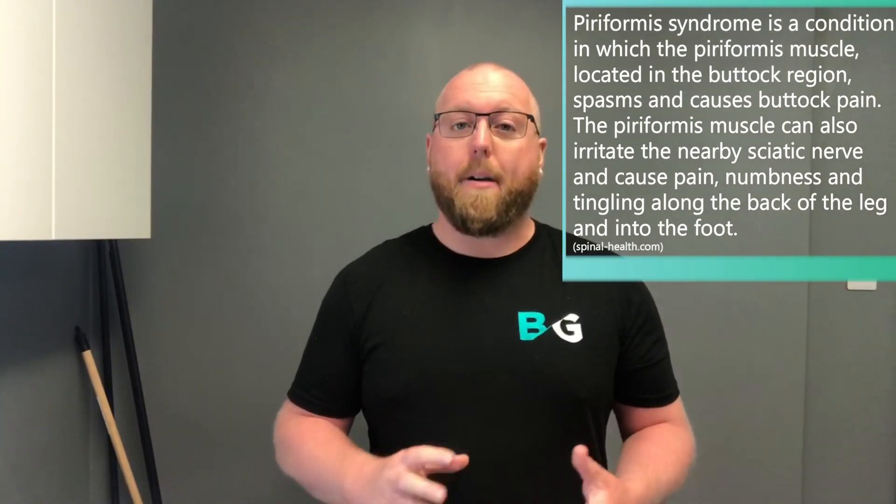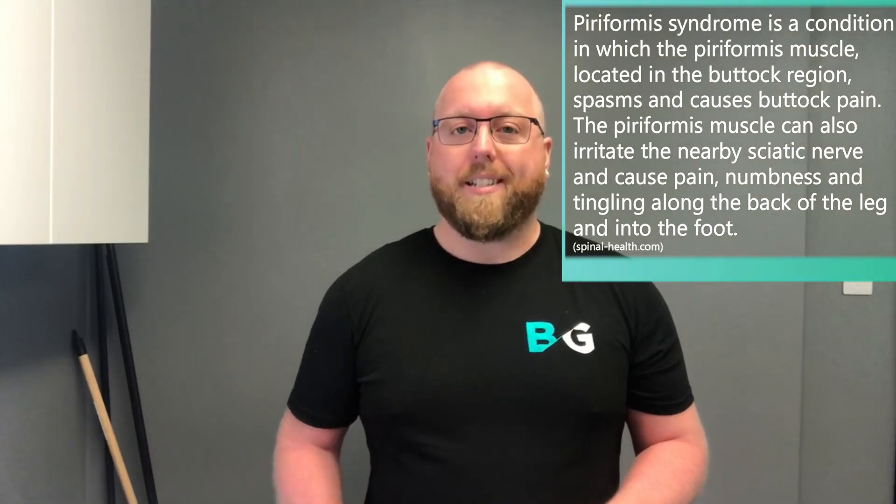Today I want to talk about piriformis syndrome. The piriformis attaches to the sacrum and to the greater trochanter of the hip. Its actions are external rotation, abduction, and extension of the hip, and it also helps as a stabilizer of the hip joint. In my opinion, the main role of the piriformis is as a stabilizer of the hip joint as we go through motions like walking, squatting, running, and any sport you want to play.